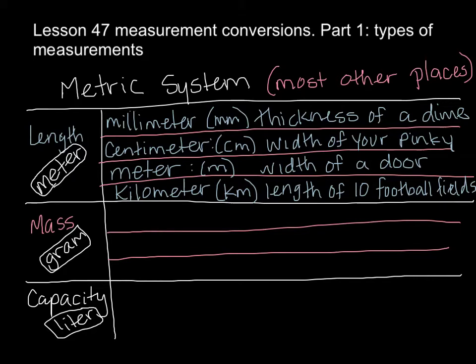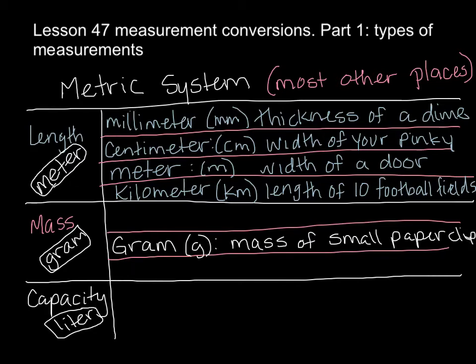Now get the gram section — the mass section — split into three lines, and we'll talk about the pieces of the gram. The base unit here is a gram. A gram is the mass of a small paper clip — those little metal squiggly things you use to hold two pieces of paper together. If you held one in your hand, that weighs about a gram.